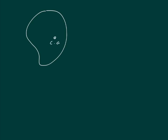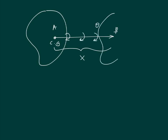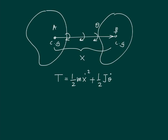Now, what if the body has the center of gravity moving from A to B by distance x, but along the way it also rotates with rotational displacement theta? The kinetic energy in this case comes first from the translational motion, which is half m x-dot squared, and second from the rotational motion, which is half J theta-dot squared. So if the center of gravity moves by x we have half m x-dot squared, and if the body rotates by theta we add half J theta-dot squared.